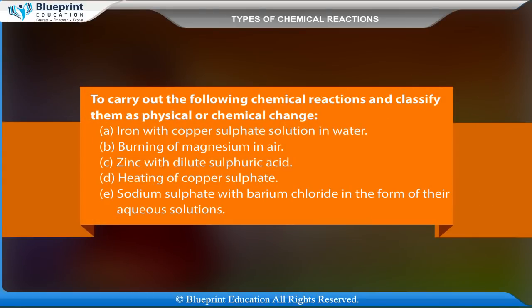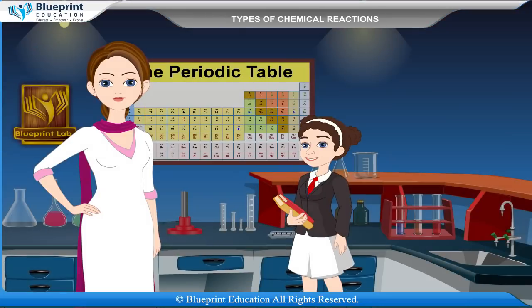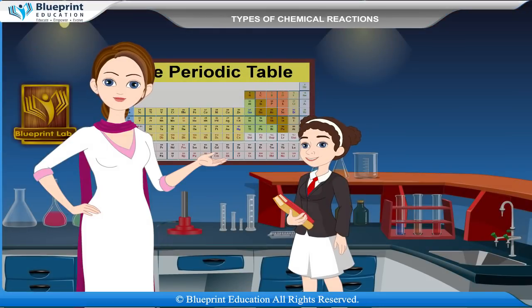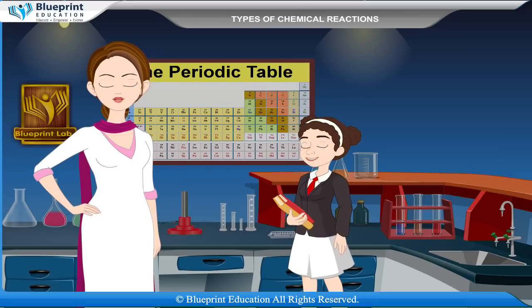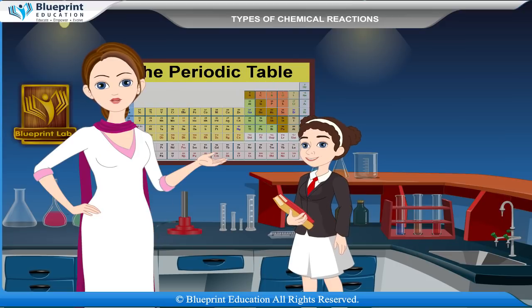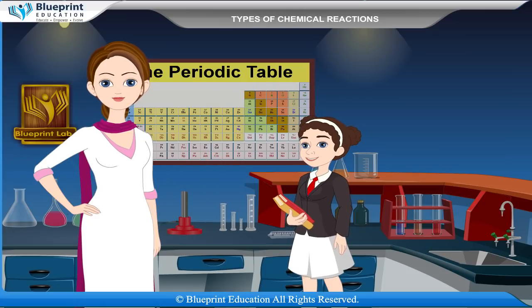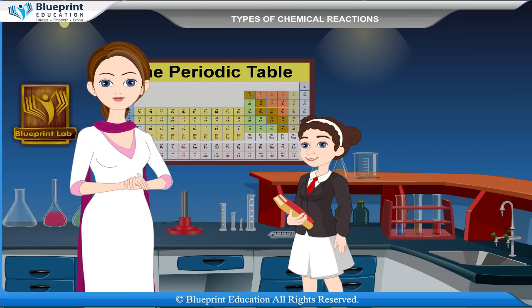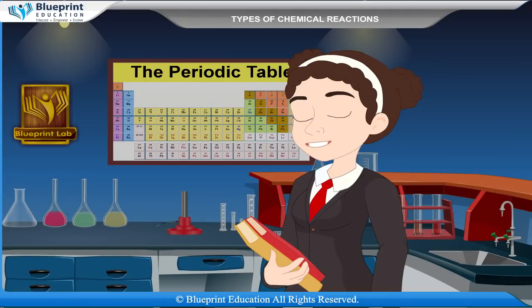We are to carry out the following chemical reactions and classify them as physical or chemical change: iron with copper sulphate solution in water, burning of magnesium in air, zinc with dilute sulphuric acid, heating of copper sulphate, sodium sulphate with barium chloride in the form of their aqueous solutions. A chemical reaction is the change of a substance into a new one that has a different chemical identity — a process involving rearrangement of the molecular or ionic structure of a substance.